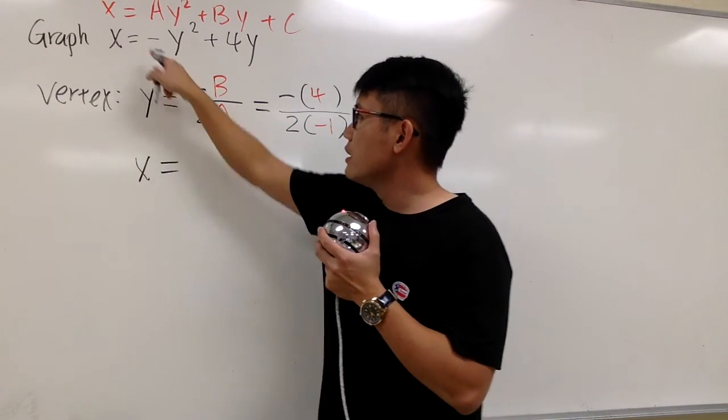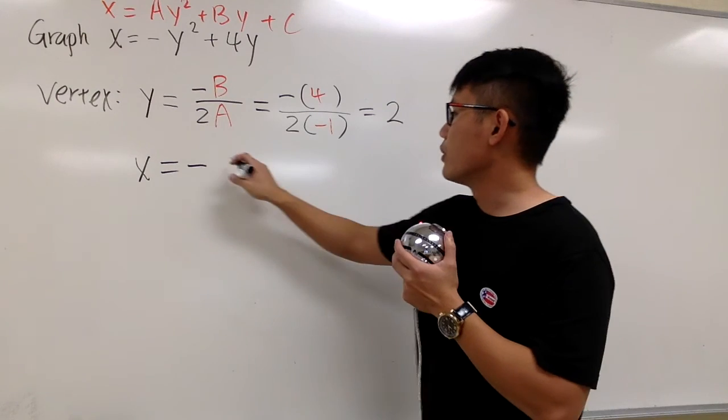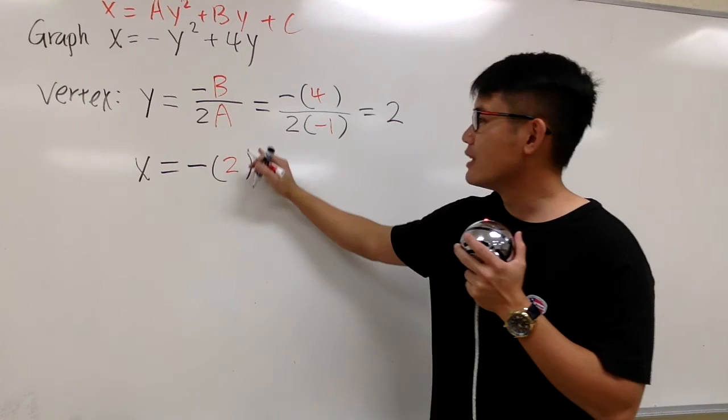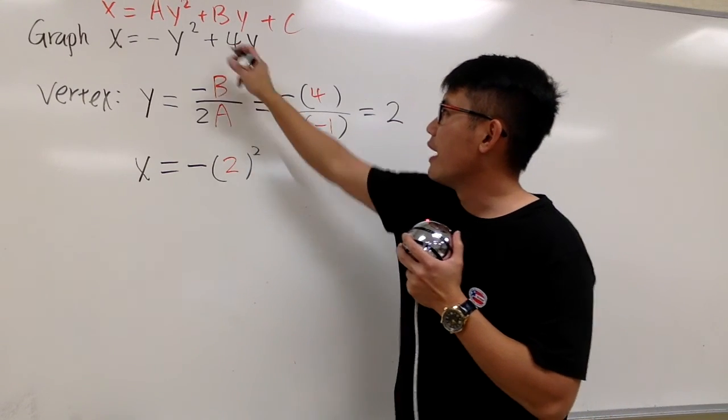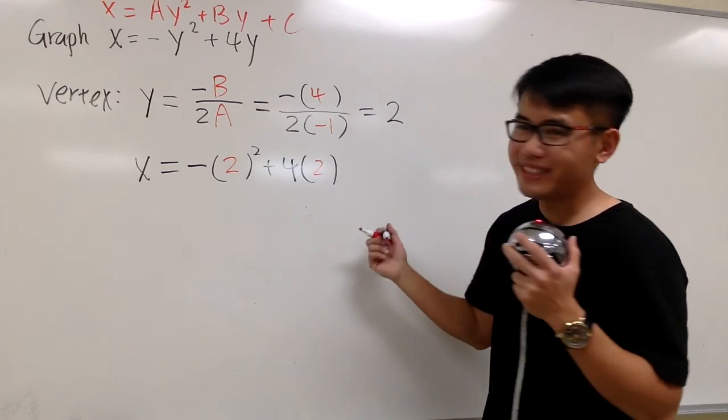So we have the x right here. It's equal to negative, the y is 2. So let me open the parenthesis first, put on a 2 right here, and then we raise that to the second power, and then we add 4 times the y, which is 2.